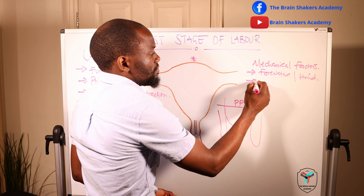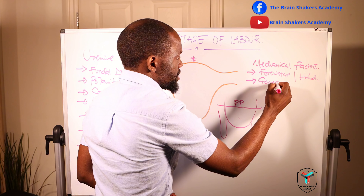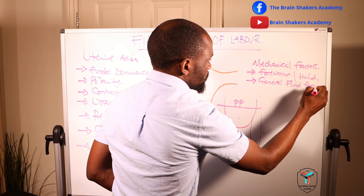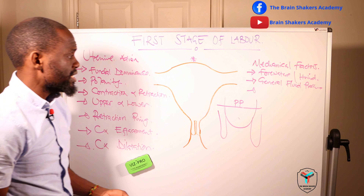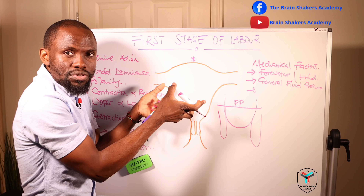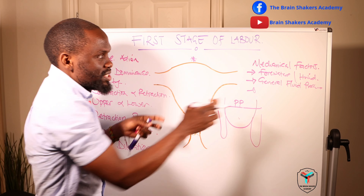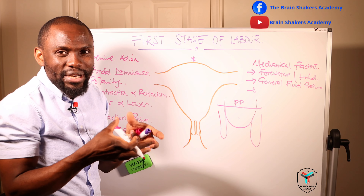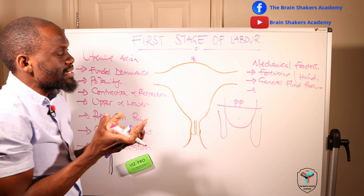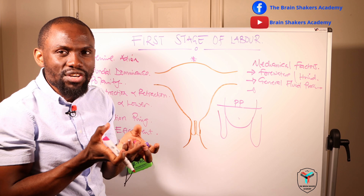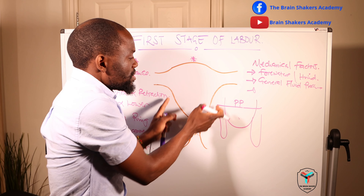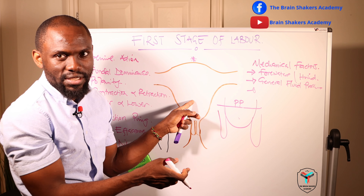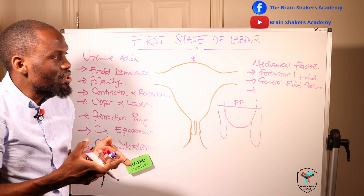From there we have what we call general fluid pressure. General fluid pressure is when the uterus is contracting and exerting pressure on the hind waters. Because the fluids are incompressible, that pressure is equalized onto the uterine lining, the uterine walls, and also onto the fetus itself. So that pressure will be equalized on the fetus.